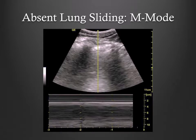In a pneumothorax, this is visualized as several pixelated strips of varying densities — also known as the barcode sign.